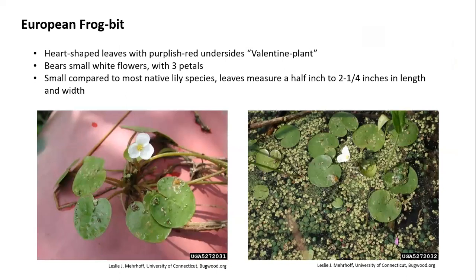European frogbit has heart-shaped leaves with purplish red undersides and is sometimes called the valentine plant because of its really distinctive heart-shaped leaves. It has white flowers with three petals. European frogbit is very, very small compared to most native lily species — the leaves are only half an inch to two and a quarter inches in length and width.